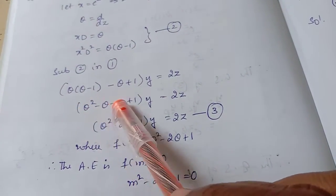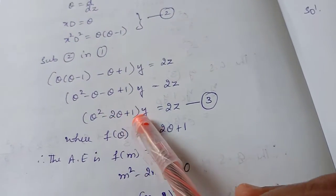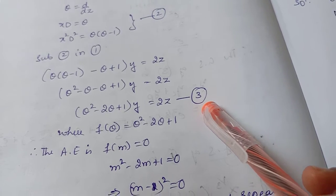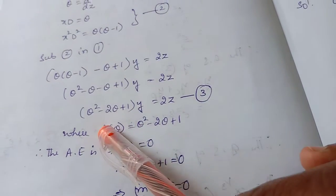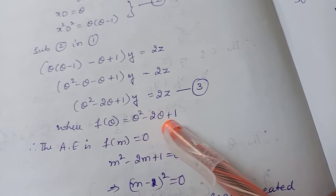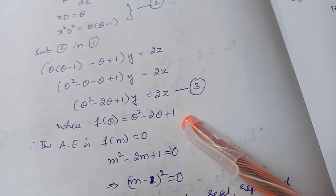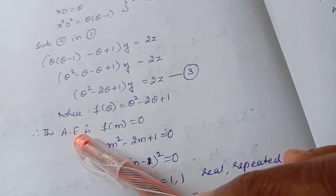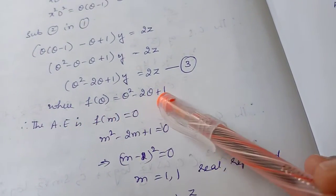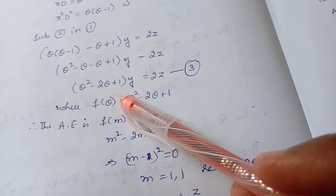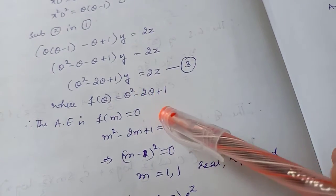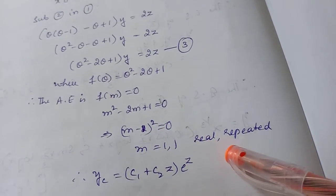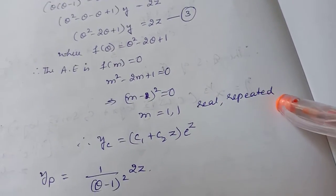Now expanding: theta squared minus theta minus theta plus 1 into y equal to 2z, giving theta squared minus 2 theta plus 1 into y equal to 2z. We take this as equation 3. We write f of theta equal to theta squared minus 2 theta plus 1, and find the auxiliary equation f of m equal to 0: m squared minus 2m plus 1 equal to 0, giving m equal to 1, 1 — real and repeated roots.